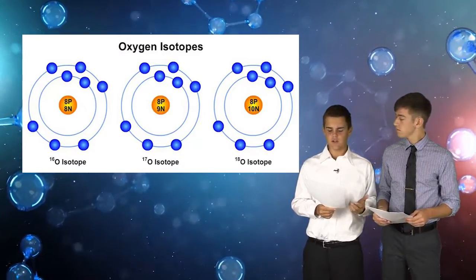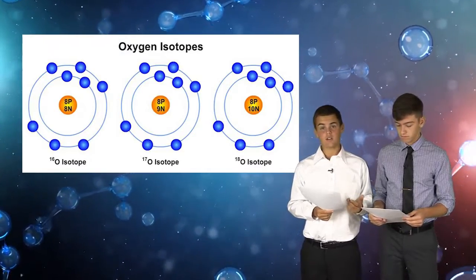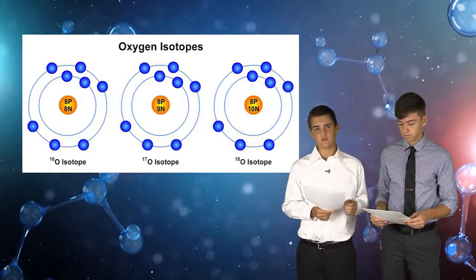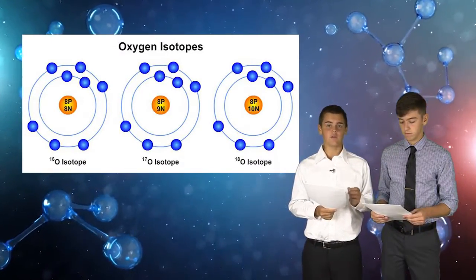Not all elements have the same amount of protons and neutrons. These types of atoms are called isotopes. For example, oxygen usually has 8 neutrons, but some isotopes have 9 or 10 neutrons.